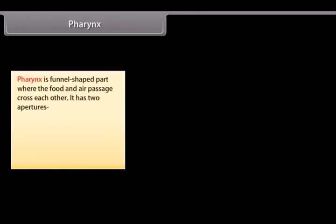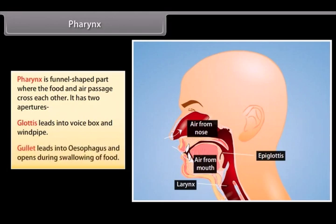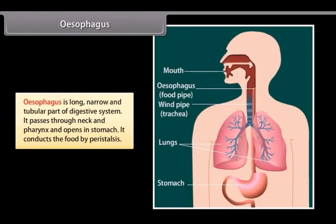Pharynx is a funnel-shaped part where the food and air passages cross each other. It has two apertures: the glottis, which leads into the voice box and windpipe, and the gullet, which leads into the esophagus and opens during swallowing of food. The esophagus is a long, narrow and tubular part of the digestive system that passes through the neck and thorax and opens into the stomach. It conducts food by peristalsis.